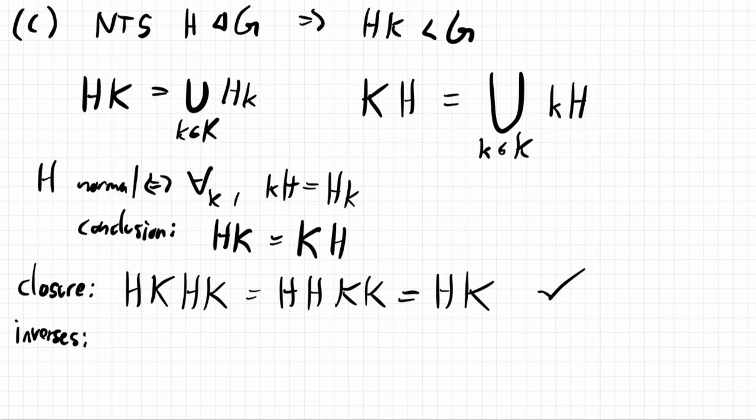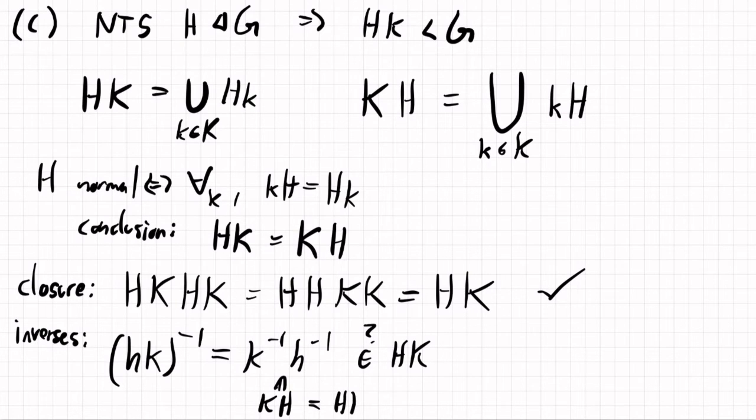So we'll show inverses by going with, so if we have something that's of the form hk, what will its inverse be? Well, that'll be k inverse h inverse. And so we want to show that k inverse h inverse is this in HK? Well, we can't see immediately that it's in HK, but it is definitely it's in KH. Right? Because k inverse is in K, and h inverse is in H, so it's in KH, but that is HK. So we actually do have this, so that's a check. So that'll show c.